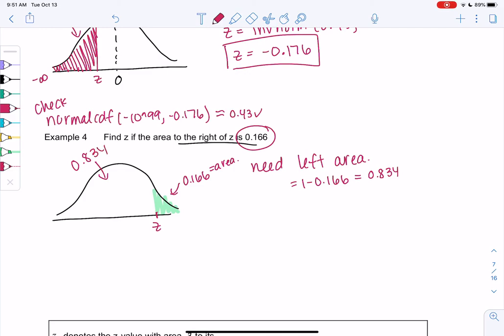So we'll just do inverse norm of 0.834. So it needs to always be the left area. So another reason why it's important to always draw the curve.